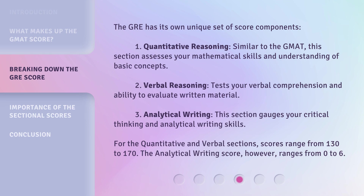For the quantitative and verbal sections, scores range from 130 to 170. The analytical writing score, however, ranges from 0 to 6.